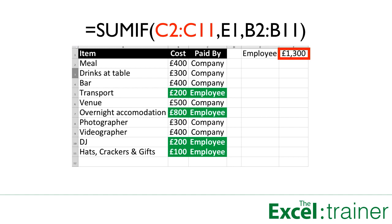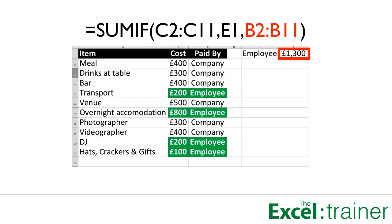So in our spreadsheet, in F1 we put SUMIF(C2:C11, E1, B2:B11), and this tells Excel to look down the range C2 to C11 and where it sees the word 'employee' — which is in E1 — it adds up the corresponding figures in the range B2 to B11.